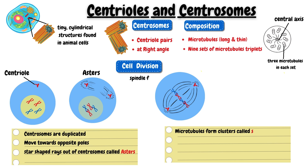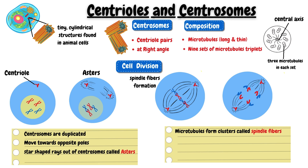The spindle fibers on each pole get attached to the chromosomes and pull them towards the poles with the help of asters, and distribute them evenly into the daughter cells.